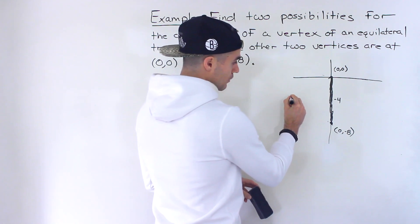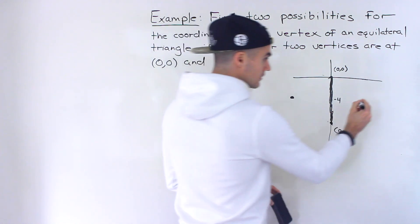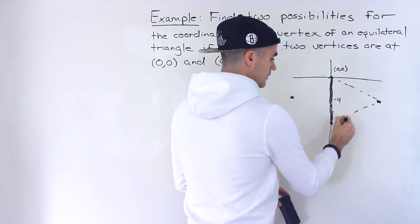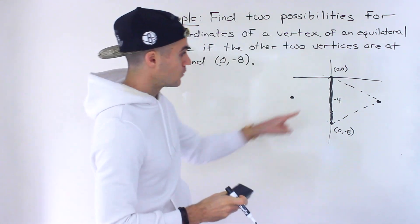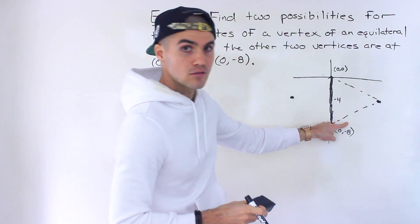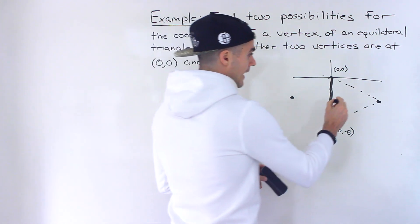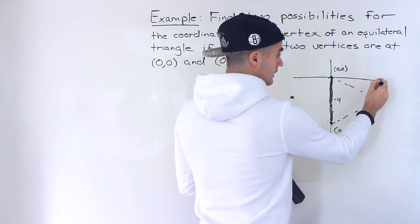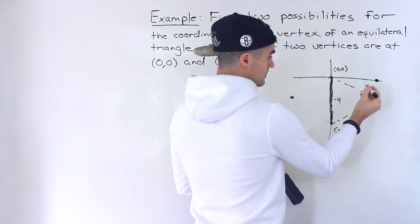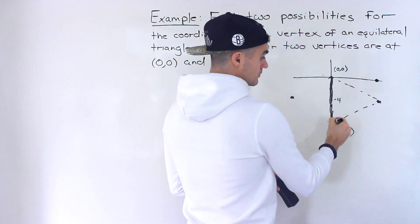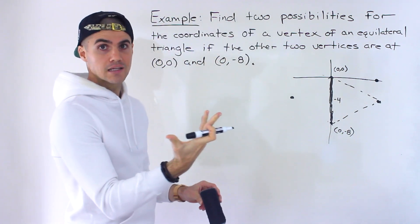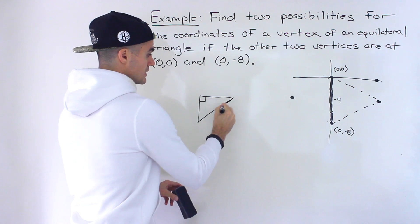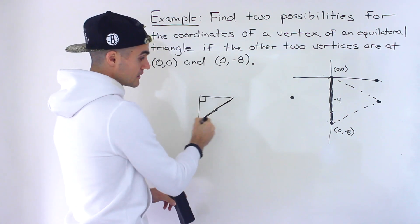If you think about it, the third point would either have to be like out here or over here. So if we start working with this point here, the triangle would look like that, where this length, this length, and this length are the same. So you can't have the third point have a y value other than negative four. For example, you can't have the third point like over here on the x-axis because then notice it's going to be a right triangle. And a right triangle can never be an equilateral triangle because with a right triangle, that hypotenuse is always going to be the longest side.